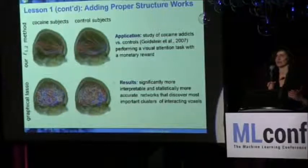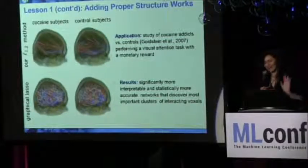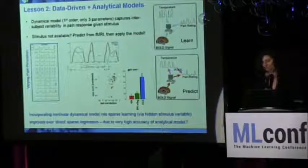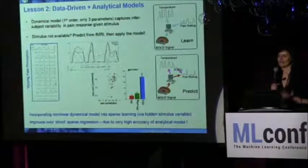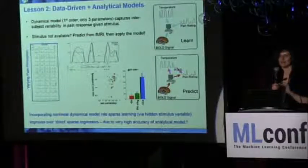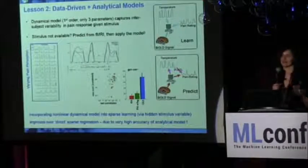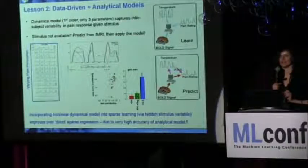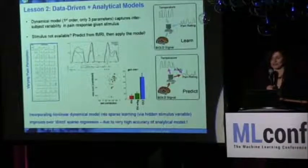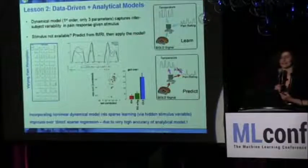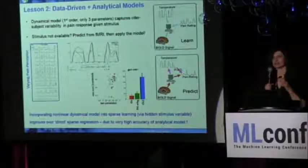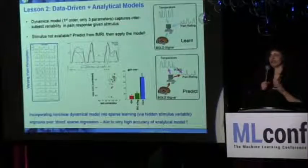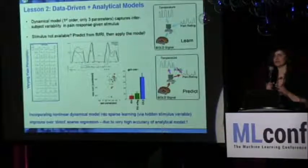So that was the first lesson — if you have good prior knowledge in your domain, you better use it instead of just blindly going with plain vanilla lasso or plain vanilla sparse graphical models, because you may need that prior to get more meaningful solutions. Another lesson we learned is that sometimes, if you know something about your domain and can come up with an analytical model for part of the domain, it may be useful to combine it with a purely data-driven model.